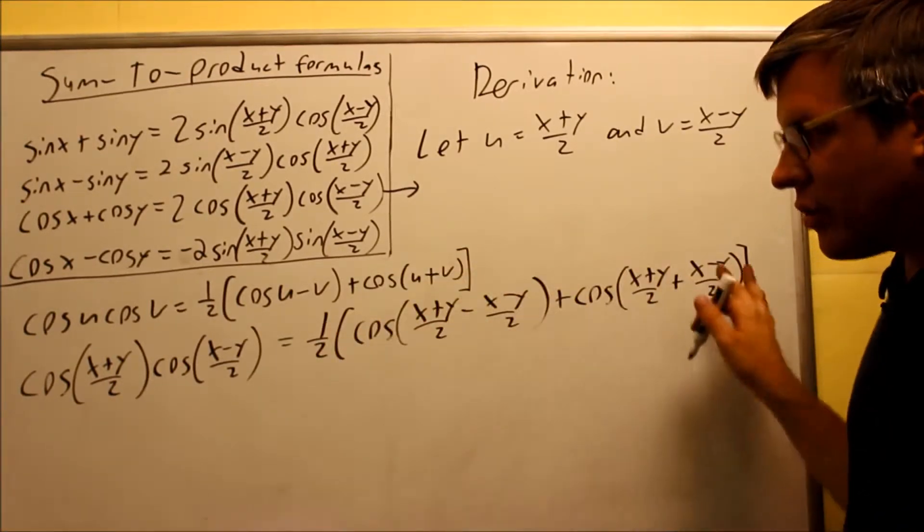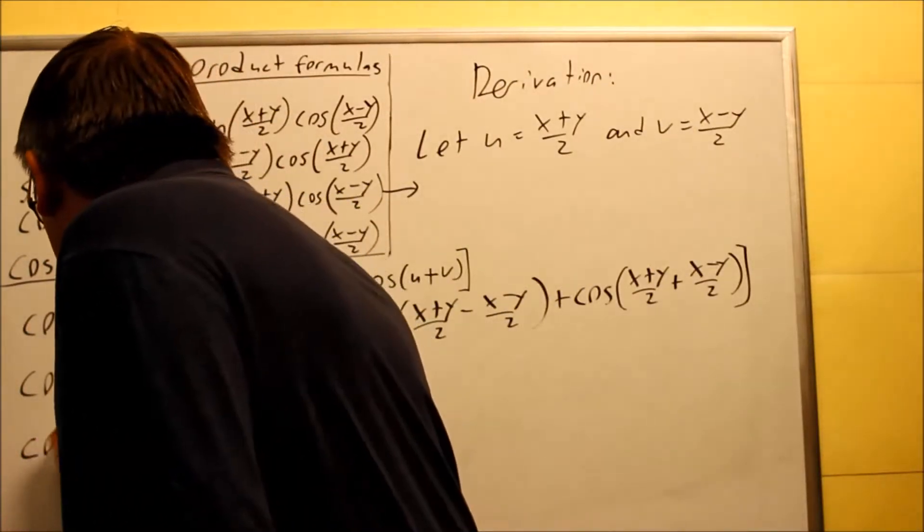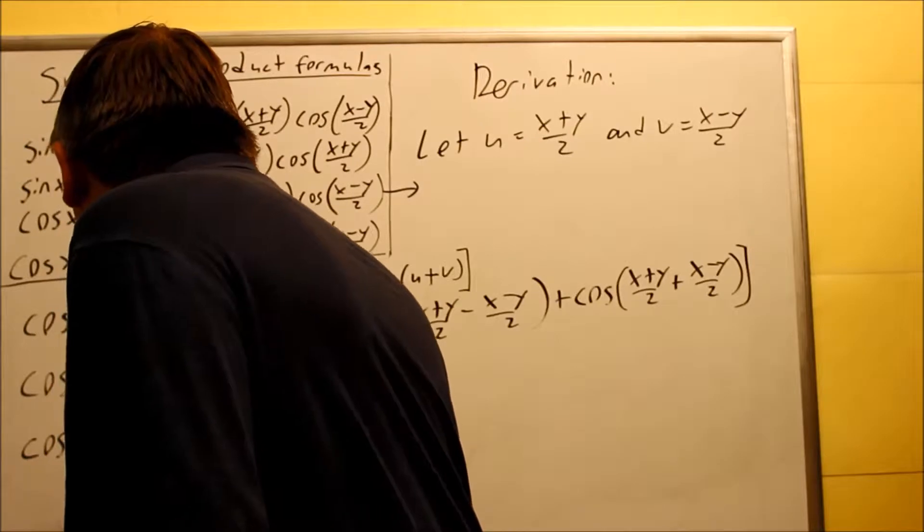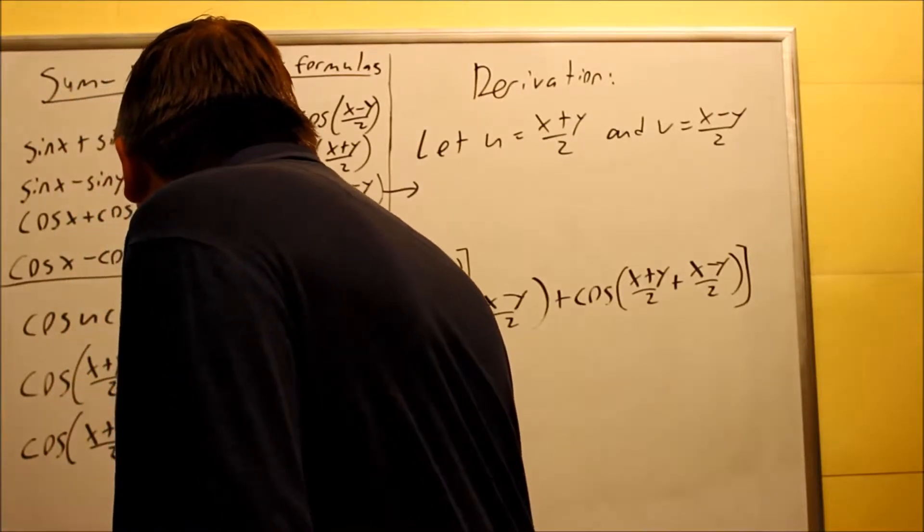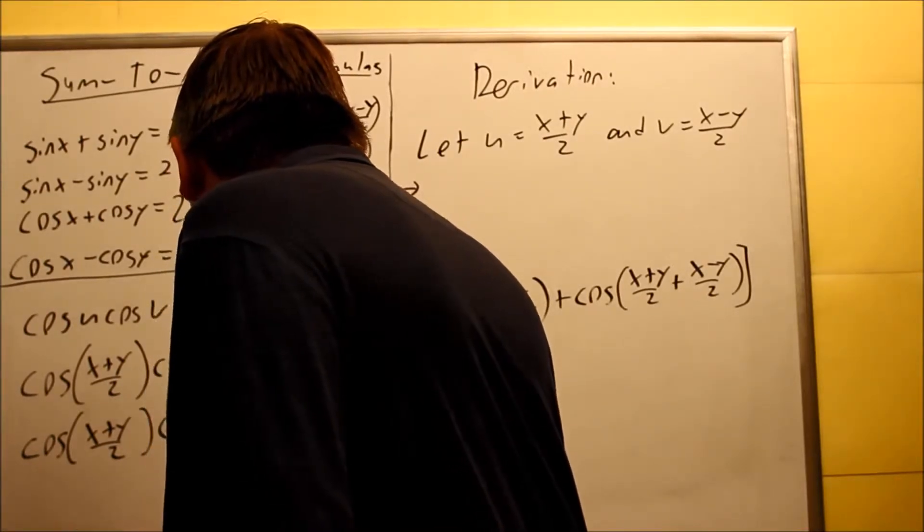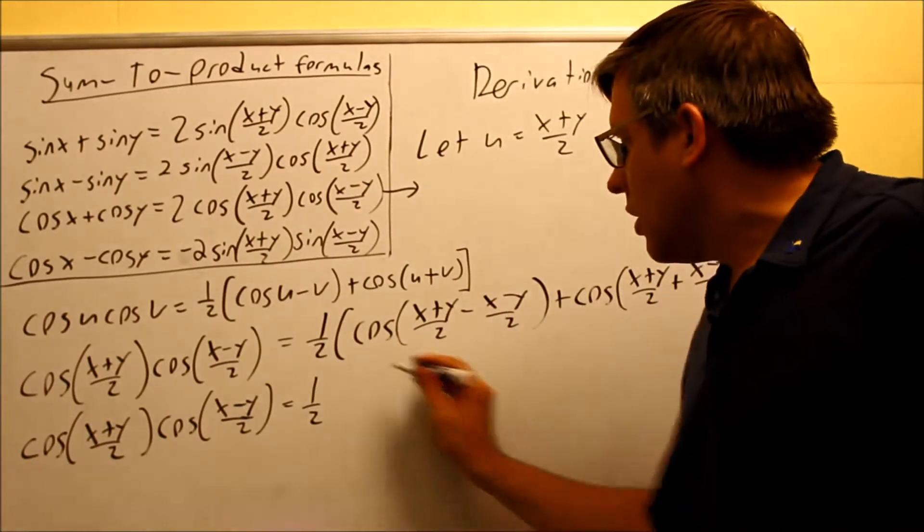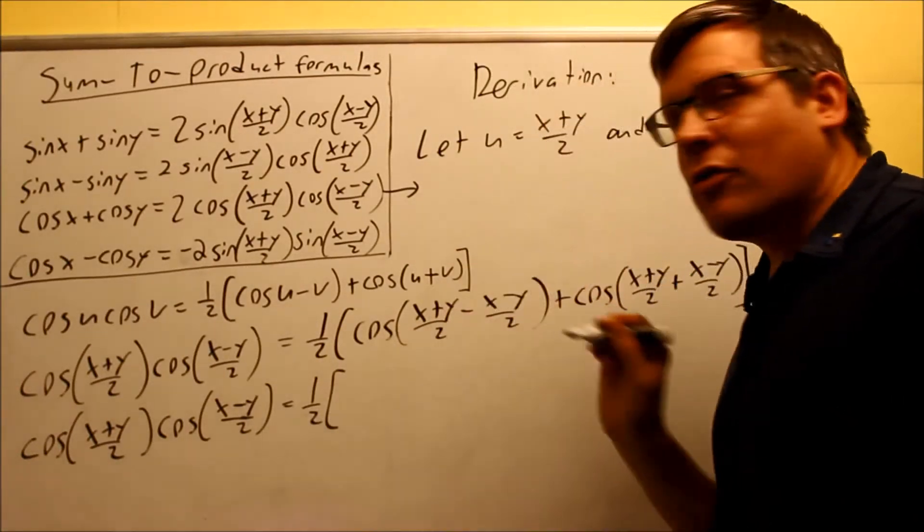So I've done all this, now I want to simplify. I'm going to do cosine of x plus y over 2, cosine of x minus y over 2. And then I have 1 half over here, and then this part, I want to simplify.